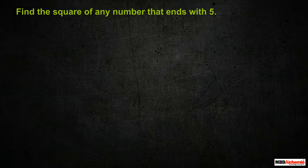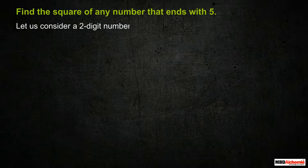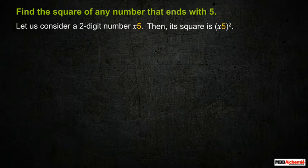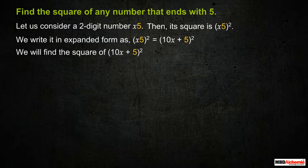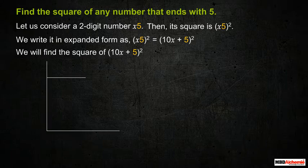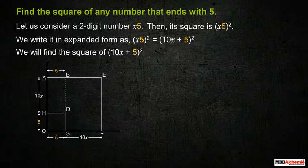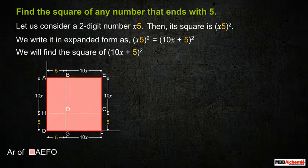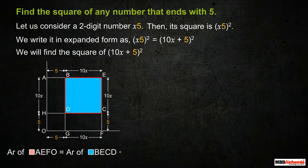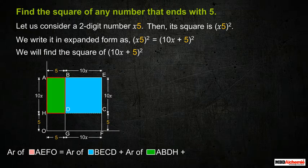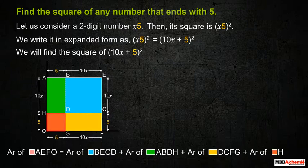Let's see one trick to find the square of any number that ends with 5. Let us consider a 2-digit number that ends with 5, that is, x5. We find its square as the square of x5, written in expanded form as (10x + 5)². By drawing a square of length (5 + 10x), we find the area using square HDGO of length 5, rectangle ABDH of dimensions 5 by 10x, rectangle DCFG of dimensions 10x by 5, and square BECD of length 10x.